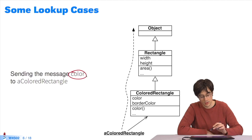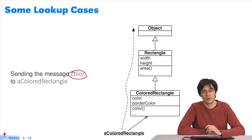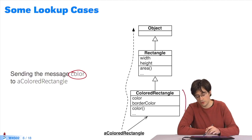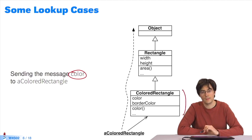Let's study two cases and review the algorithm I just listed on them. We send the message color to acolored rectangle. The algorithm searches the receiver class for a method called color. It finds it and returns it.